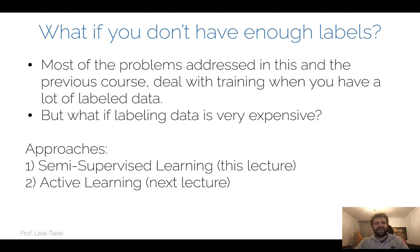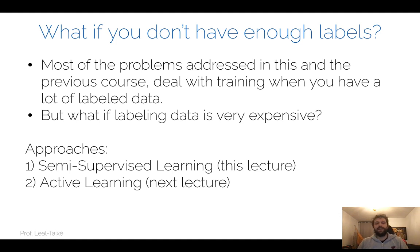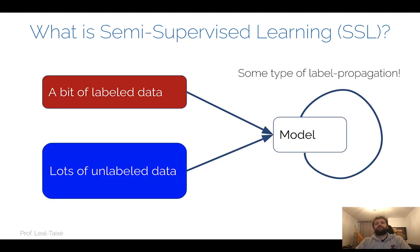These two approaches — semi-supervised learning and active learning — are related to each other, and we'll cover both. Today we deal with semi-supervised learning: having a dataset where only some images are labeled, and wanting to use the unlabeled part of the dataset as well. In the next class we'll deal with active learning: how to find the most interesting images to label so that network performance is maximized.